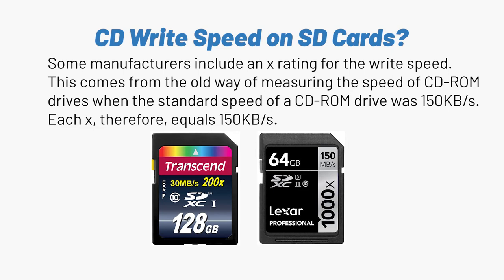The actual read speed you can attain depends on three things: one, the card itself and the brand; two, your card reader, which also affects how much data can be transferred; and three, the USB port that the card reader is plugged into. So you might have a 150 megabytes per second rated card, but if you stick it into a card reader that can't read at that speed, you won't achieve that rating. The 1000X number found on some cards actually compares the speed of the card to a CD writer speed — the speed at which you can write data onto a writable CD disk.